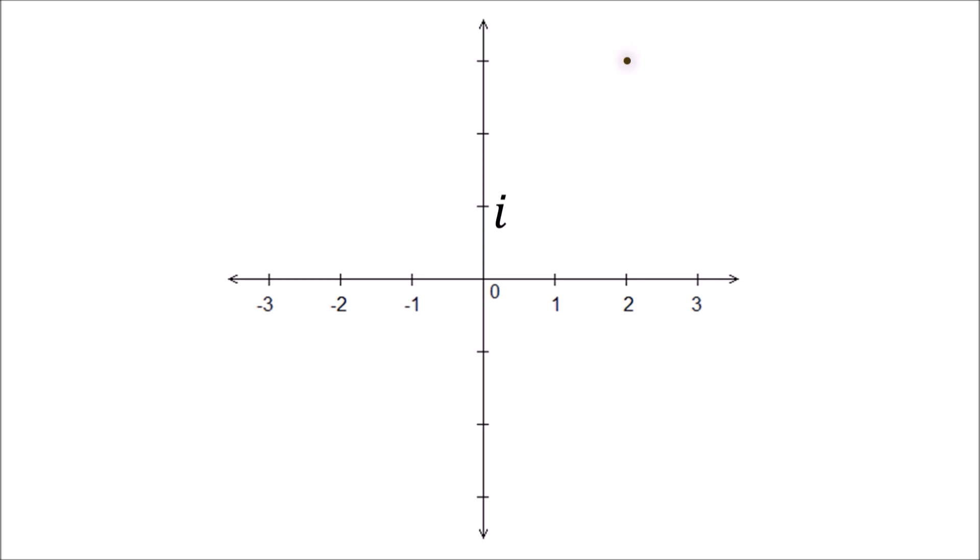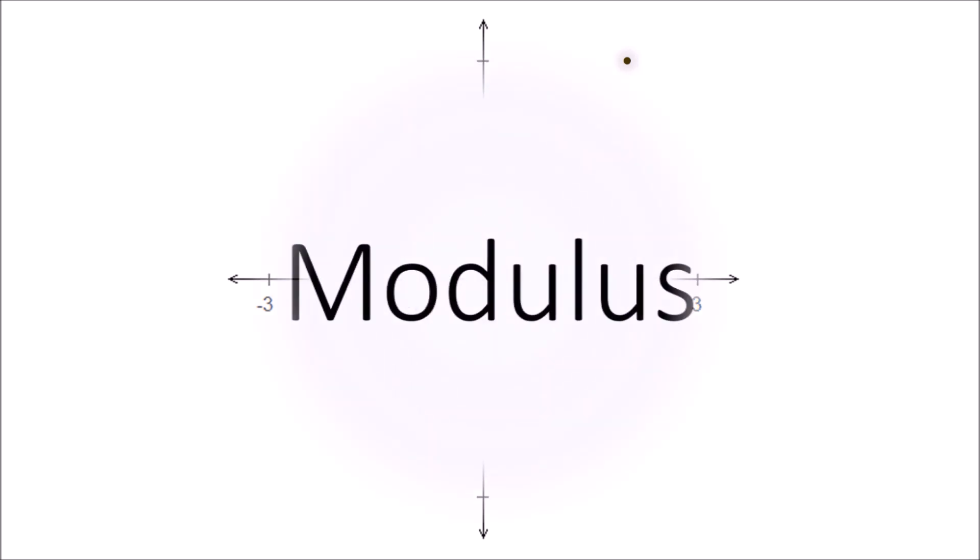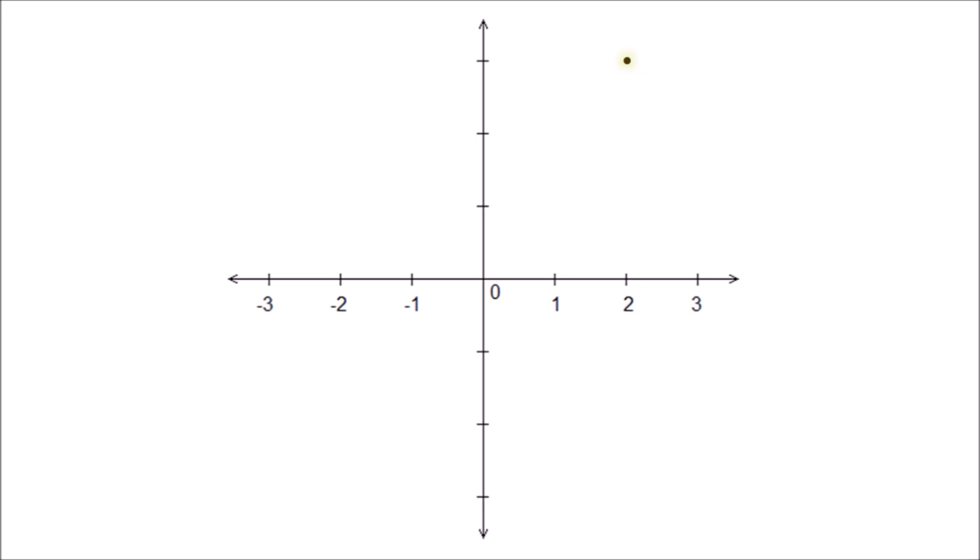I mentioned it just before, the distance between i and 0 in the number plane is 1. This distance is called the modulus. We give it the letter r. And so does 2 plus 3i also have a modulus. It's the square root of 13.